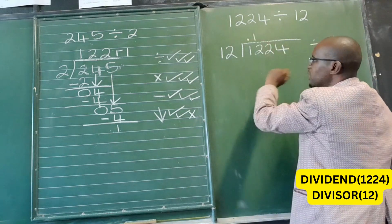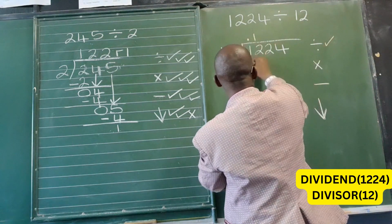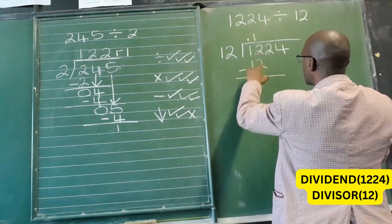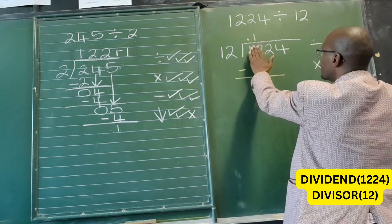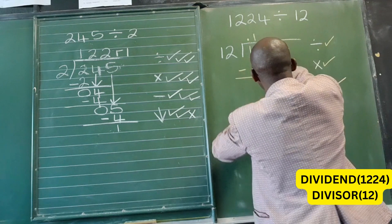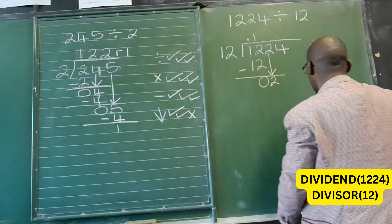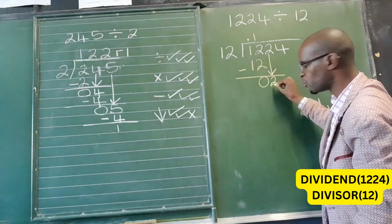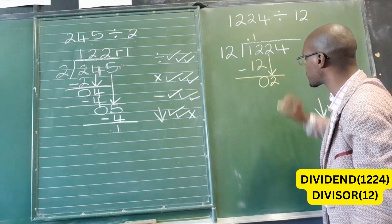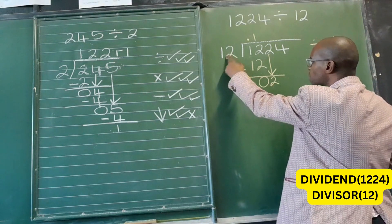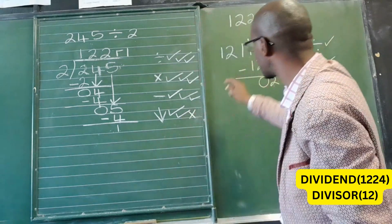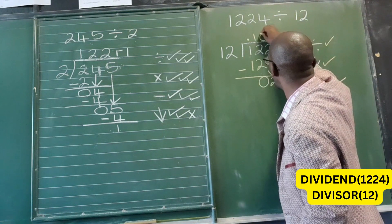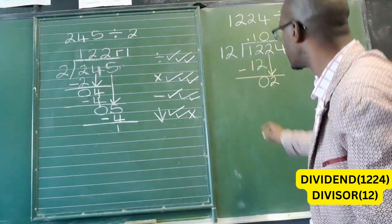Twelve goes into 12 once — that is division. Multiply: 12 multiplied by 1 gives us 12. Subtract: draw our line, 12 minus 12 gives us zero. Bring down: we've used the 1 and the 2, so bring down the next number which is 2. A new number is formed — 2. We repeat the rules: 12 goes into 2 how many times? Zero times, because 12 cannot go into 2.